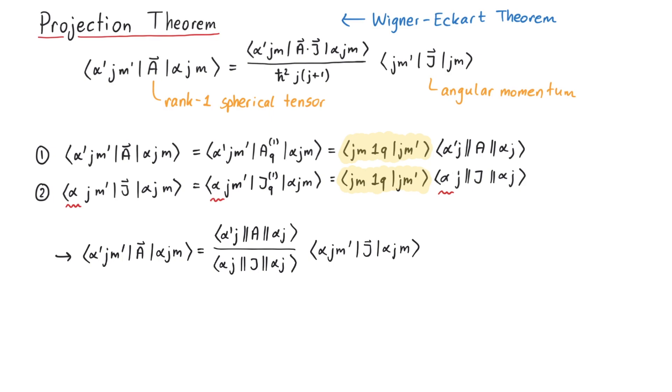In fact, since we were able to choose alpha and alpha prime to be equal, we can remove it from this expectation value since J does not act on the other quantum numbers represented by alpha.